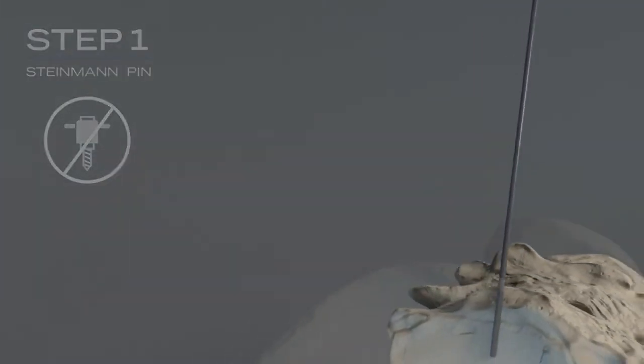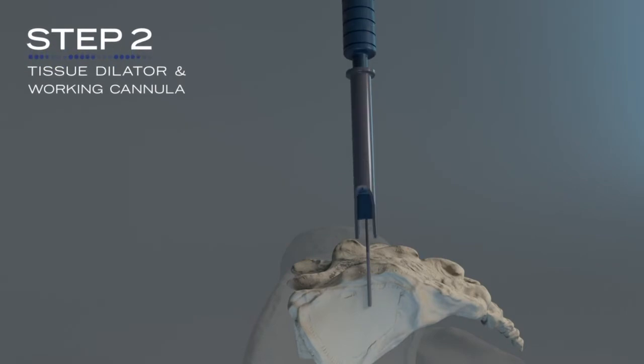Next, the tissue dilator and working cannula are inserted, creating separation in the joint.